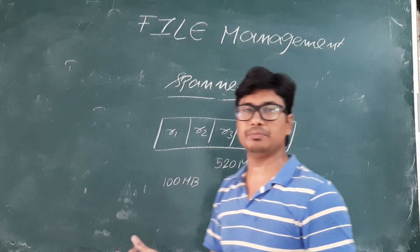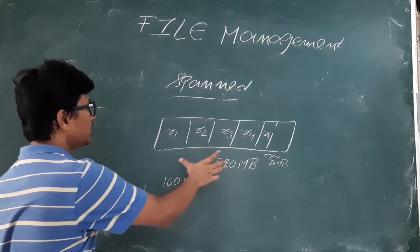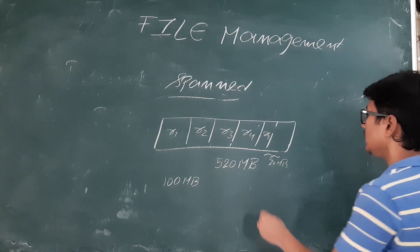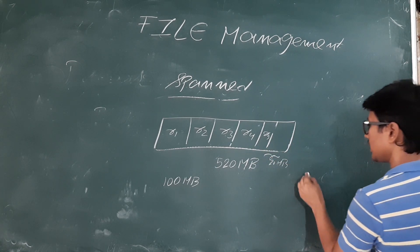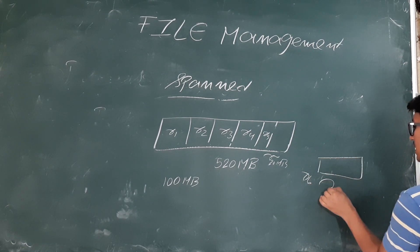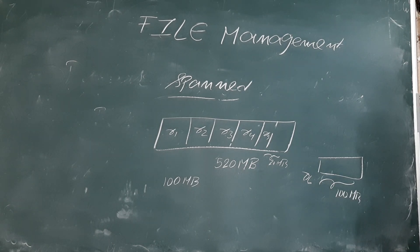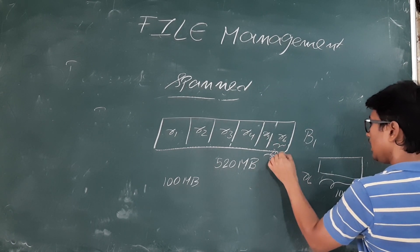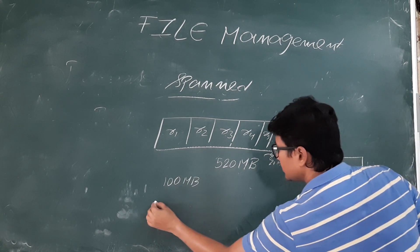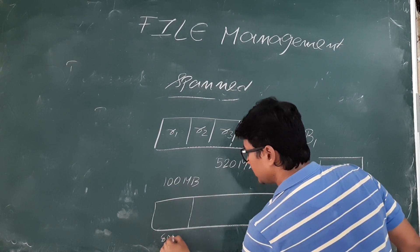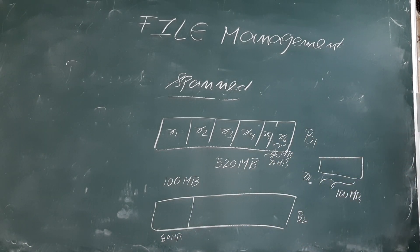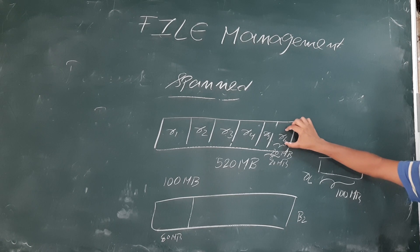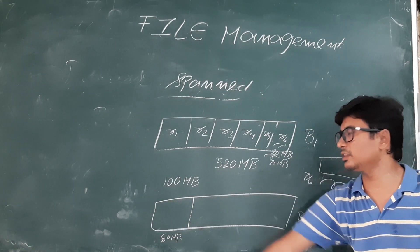We have a block of size 520 MB and each record size is 100 MB, so in 520 MB I can keep 5 records and 20 MB will remain. In the spanned strategy, it will not waste even this 20 MB. It will keep record 6 — which is 100 MB — partially. So in block 1 it will keep the first 20 MB of record 6, and then the remaining 80 MB will be kept in block 2.